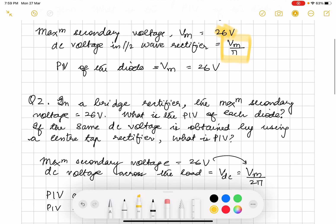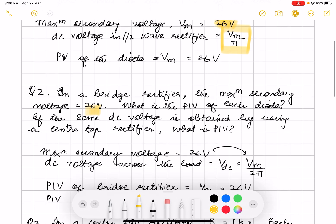Next one is in a bridge rectifier, the maximum secondary voltage is 26 volt. It's the same thing. We have just changed from center tap to bridge. What is the PIV of each diode? If the same DC voltage is obtained by using a center tap rectifier, what is the PIV? So again you have to remember the formulae for PIV and DC voltage.